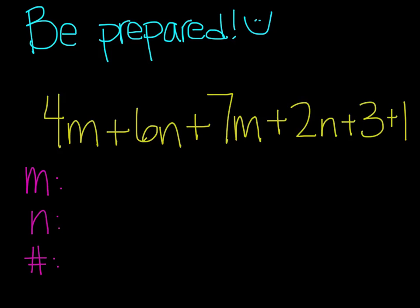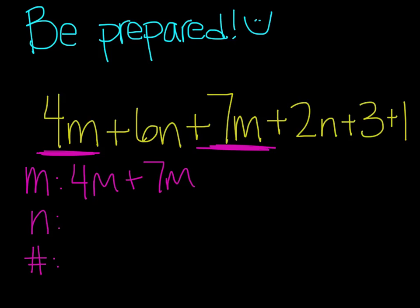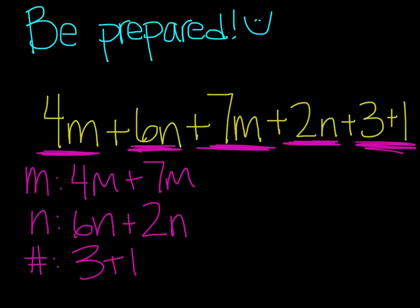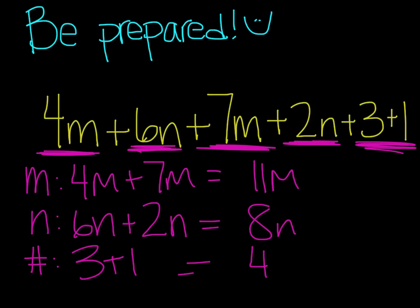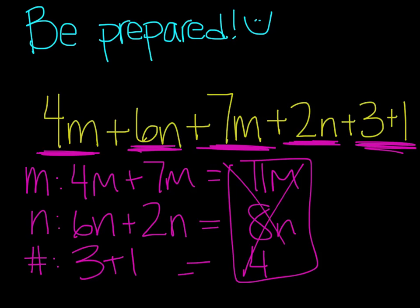Let's go through and underline all of the m terms. So I'm going to put 4m plus 7m. And I have n terms — 6n and 2n — so I'm going to add those together. And then the 3 and the 1 are my number terms, so 3 plus 1. So 4m plus 7m is 11m. 6n plus 2n is 8n. And 3 plus 1 is 4. My final answer is 11m plus 8n plus 4.